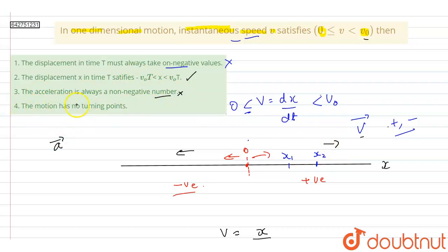Option four is the motion has no turning points. This is also incorrect because here we can see that if a particle is going to positive x direction it can come to stop and then change its direction towards the negative x direction, and in that case it will turn.